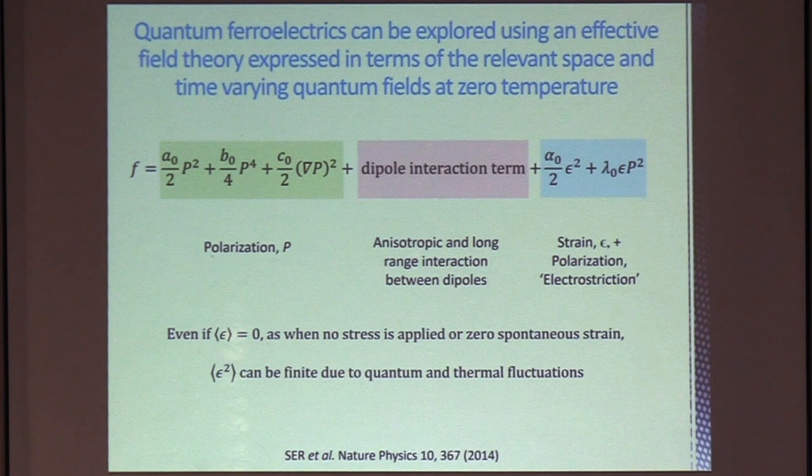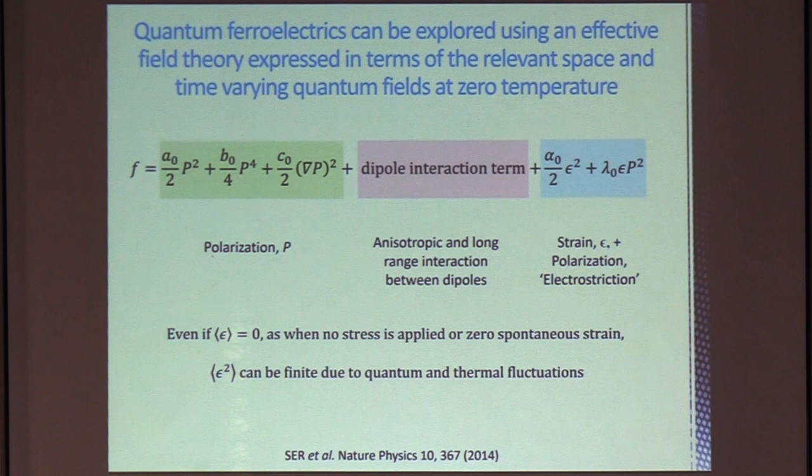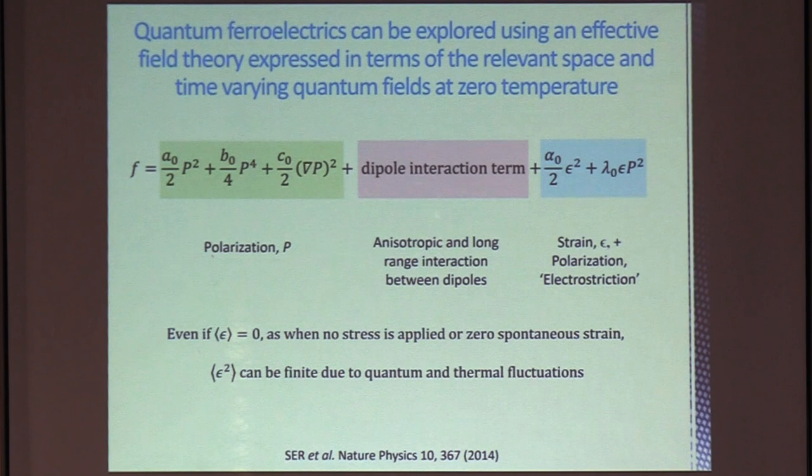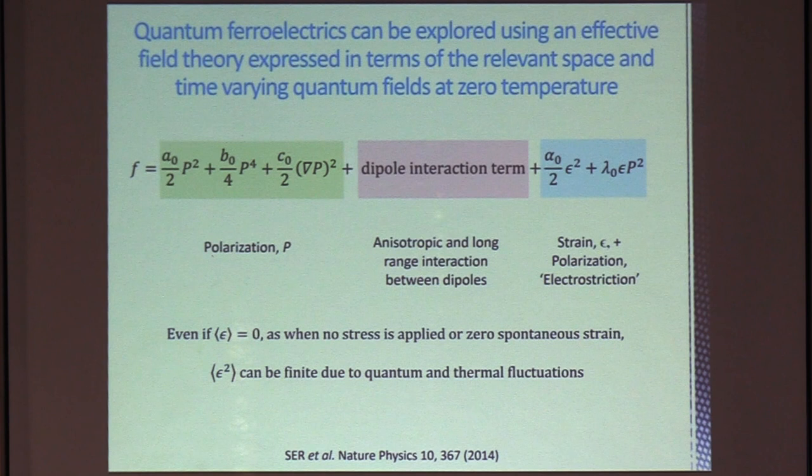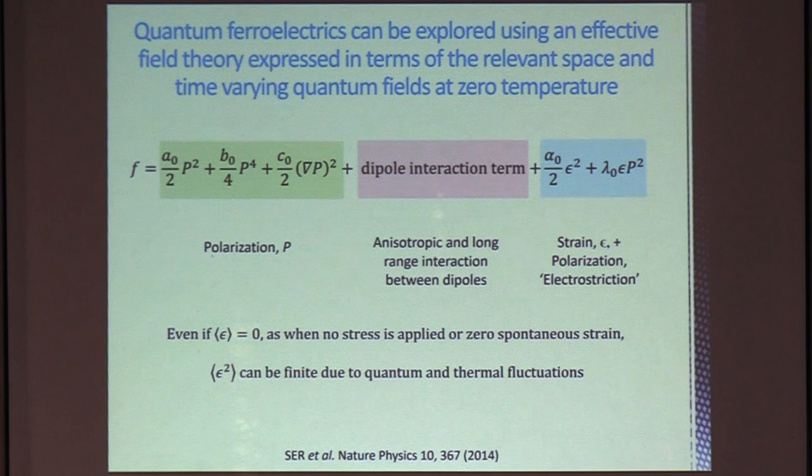So this is the kind of model that we use to describe these systems. So we have a quartic field theory here in the polarization, gradient term. But of importance here is the dipole interaction. And this term here, which is coupling to strain. So this is the electrostrictive coupling. This turns out to be important in many ferroelectrics. So even if this spontaneous strain is zero, or you're not applying a stress to the material, or there's no spontaneous strain, the fluctuating strain due to quantum and thermal fluctuations, can strongly affect the properties and the phase diagram.